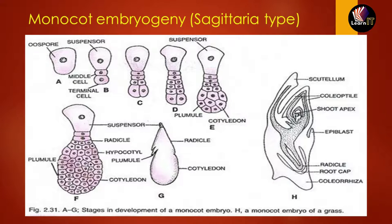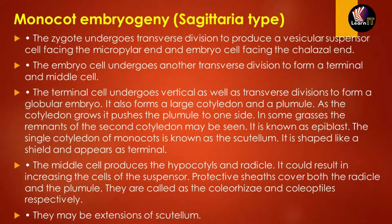The terminal cell also forms a large cotyledon and a plumule. As the cotyledon grows, it pushes the plumule to one side, which is known as the epiblast. The single cotyledon of a monocot is known as the scutellum — it is shield-shaped and appears terminal. The middle cell produces the hypocotyl and radicle. Protective sheaths cover both the radicle and the plumule; these are called the coleorhiza and coleoptile respectively, and may be extensions of the scutellum.